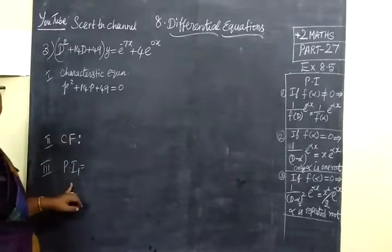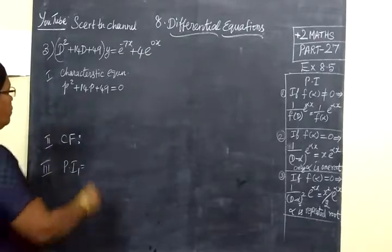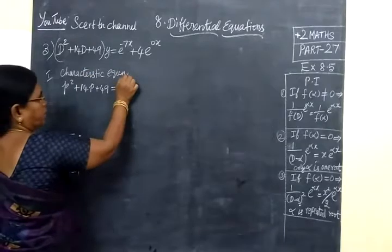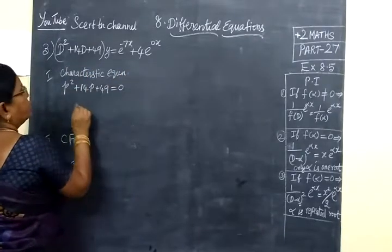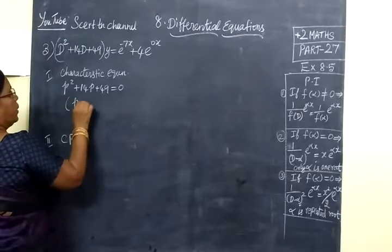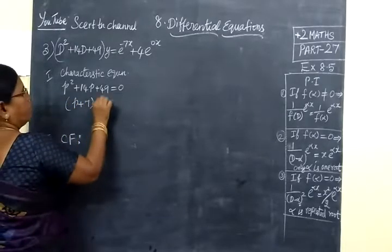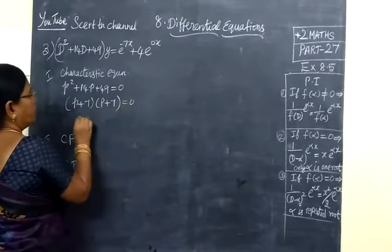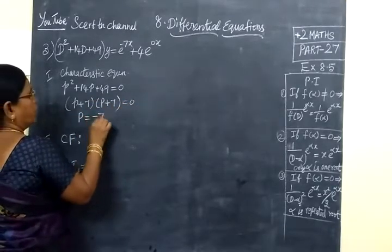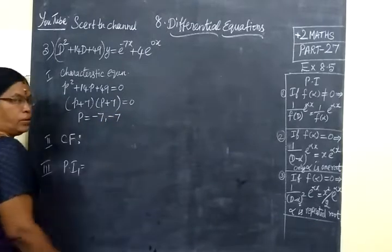First find the characteristic equation: P² + 14P + 49 = 0. This factors as (P + 7)(P + 7). The product is 49 and sum is 14P, so P = -7, -7. We have repeated roots.